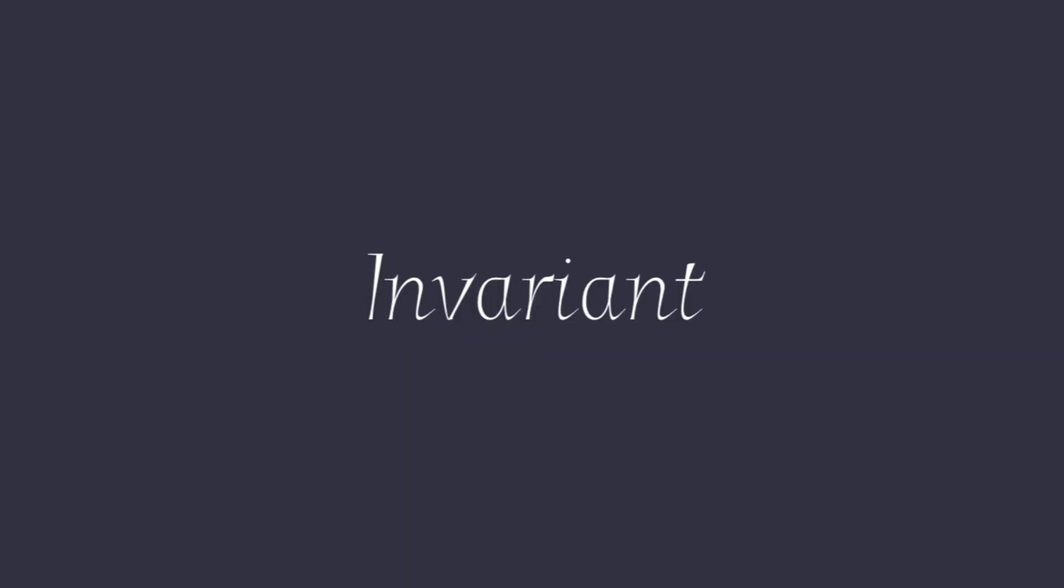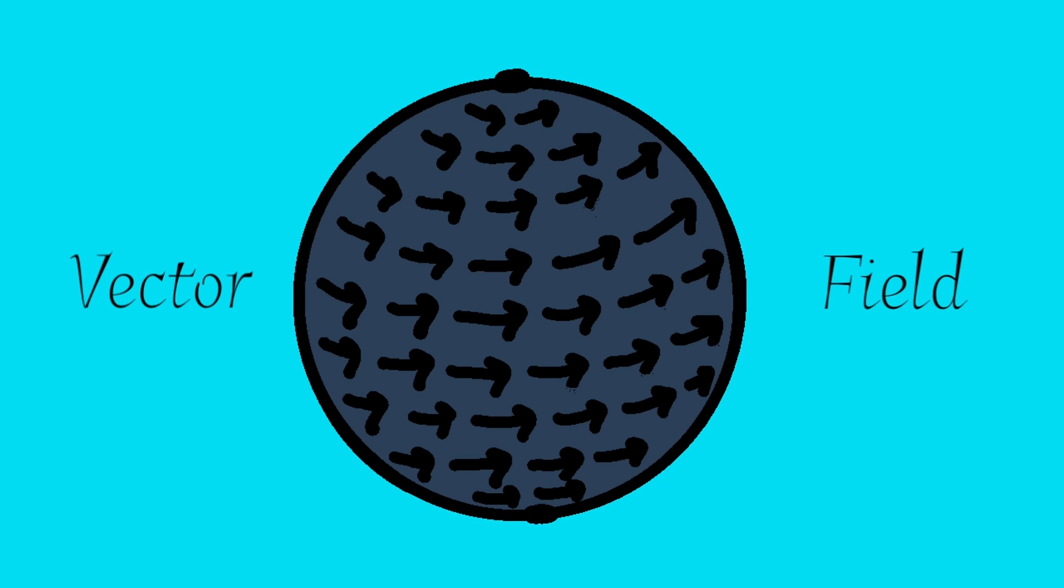Hence, the Euler characteristic is known to be an invariant, as it remains unchanged through continuous deformation of a manifold. Now, let's talk about vector fields.